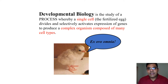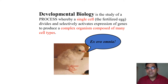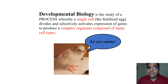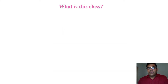Developmental biology is a study of a process whereby a single cell — a fertilized egg — further divides and selectively activates the expression of genes in order to produce a very complex organism. This complex organism is composed of many cell types. When we started, it was just a single cell, a fertilized egg, but as we go further, this single cell gave rise to eyes, legs, the head, and other parts of the body.